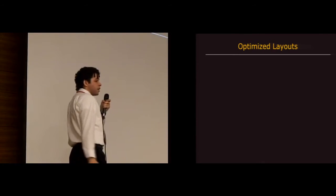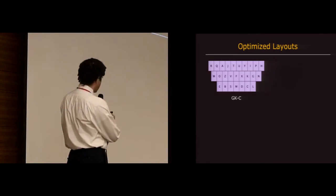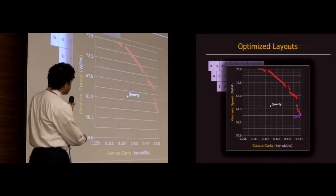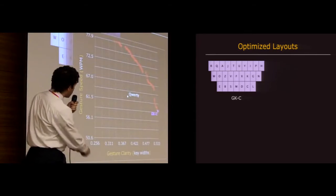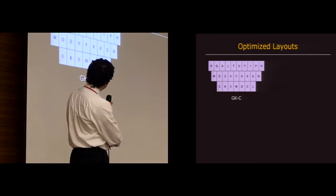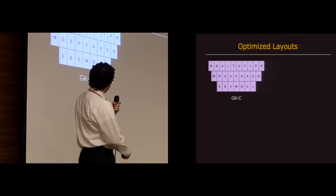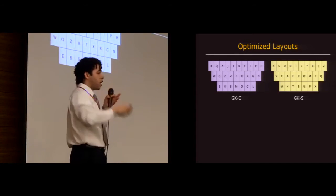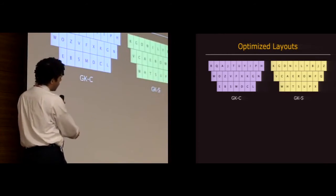So here's what some of the optimized layouts actually look like. The first is GKC, which is gesture keyboard clarity. That's the one that maximizes clarity, so it's right here. I call this the WAS layout for short. You'll notice that it basically spaces apart common letters in a radial fashion, outward.